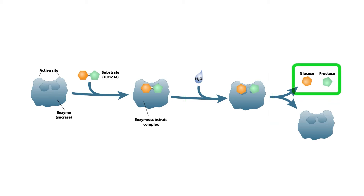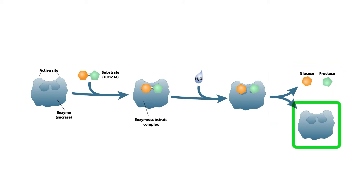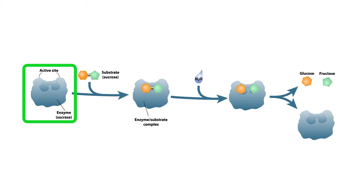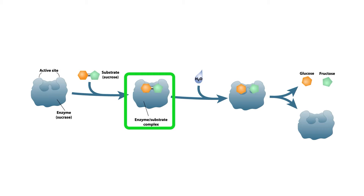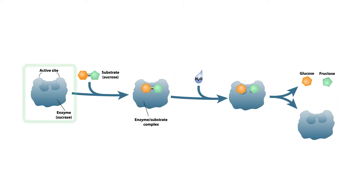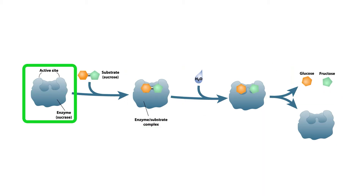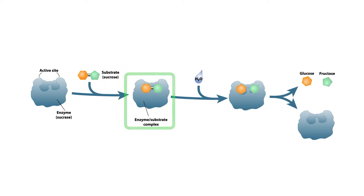The separated products are then released from the enzyme. Notice how the enzyme is the same before and after the reaction. Enzymes aren't used up during the reactions they assist with — they are available to help speed up reactions over and over again. Another sucrose molecule will soon attach to the sucrase enzyme and the process will repeat. Sucrase is just one of many enzymes in our bodies that enables digestion.